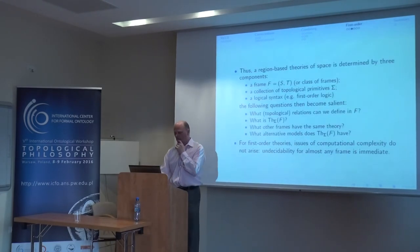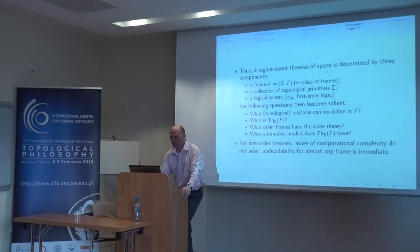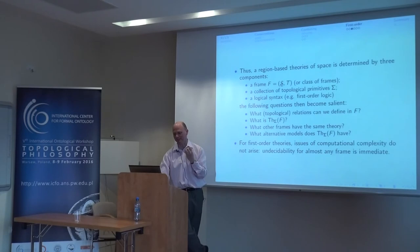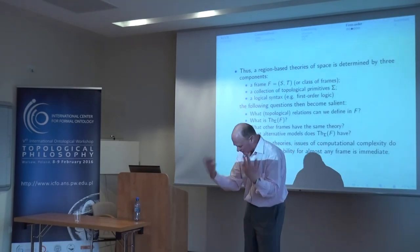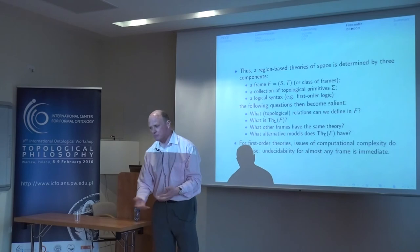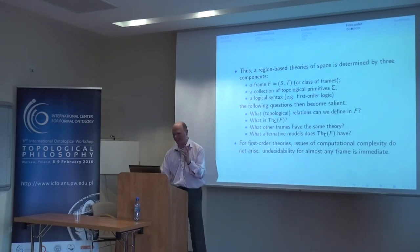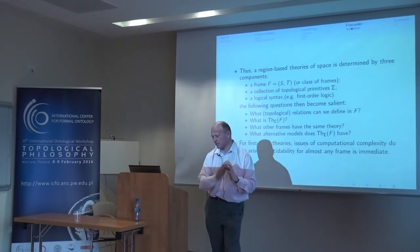So region-based theories of space really have three components: a frame — a topological space with a collection of regular closed sets — a collection of topological primitives such as connectedness, contact, Whitehead's contact relation, interior connectedness, or the RCC8 primitives (in the first-order setting they're all interdefinable), and a logical syntax, as it might be propositional logic or first-order logic.